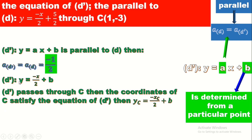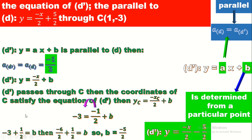Substituting: -3 = -1/2 + b. Moving -1/2 to the other side gives b = -3 + 1/2. Converting to the same denominator: b = -6/2 + 1/2 = -5/2. Therefore the equation of D' is y = -x/2 - 5/2.